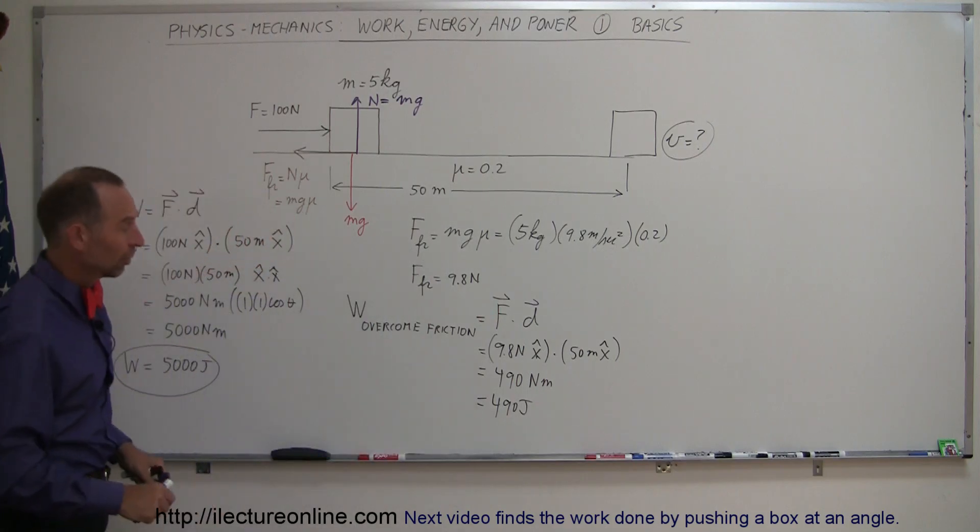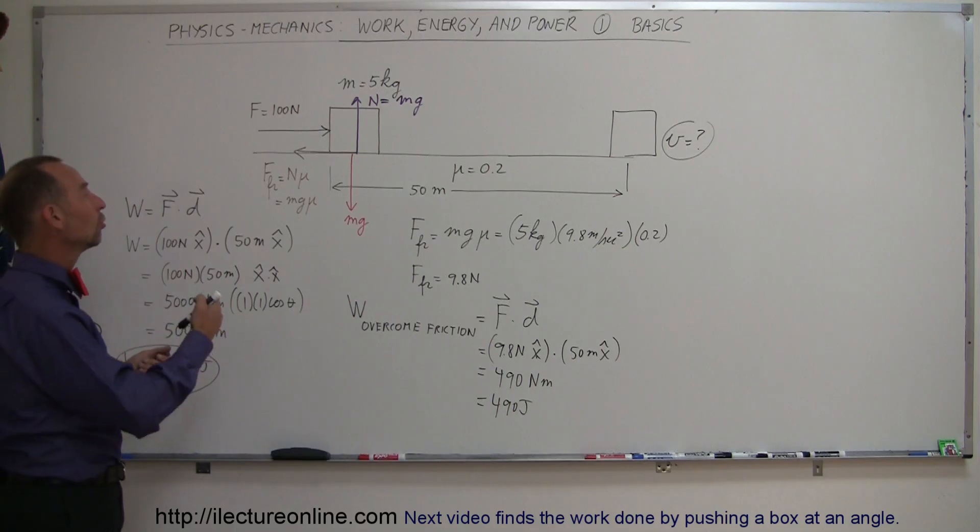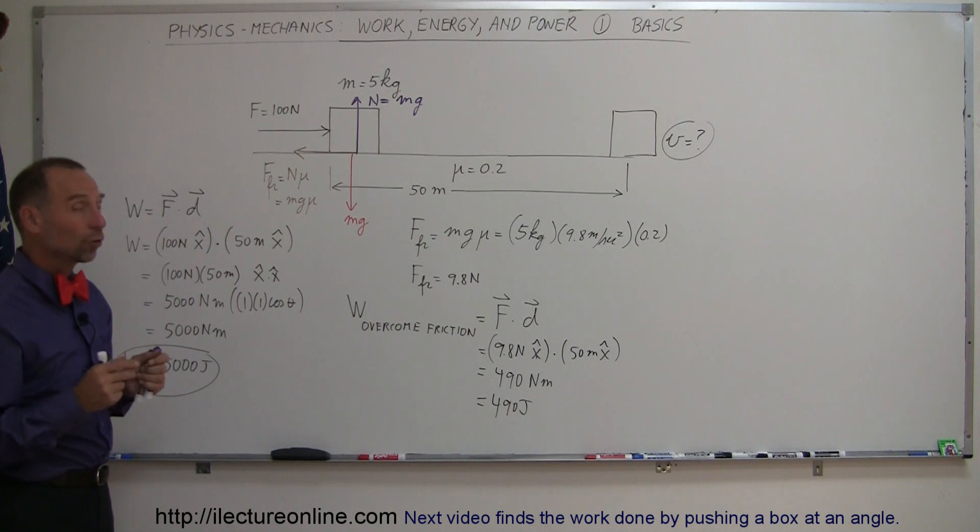So we can see that of the 5,000 joules of work that was done, 490 of it was used to overcome friction, and the remainder will then be used to do work on the block by moving it to the right. Of course, what will happen then is the block will actually gain speed, gain velocity.